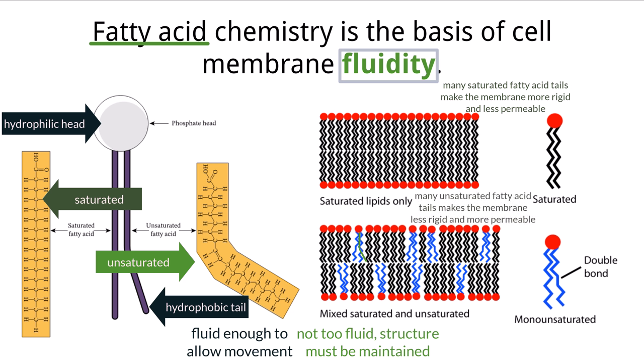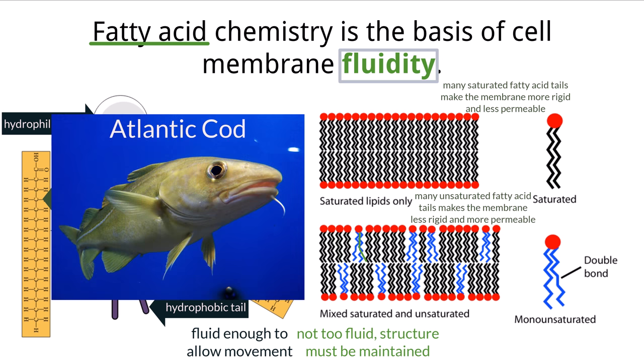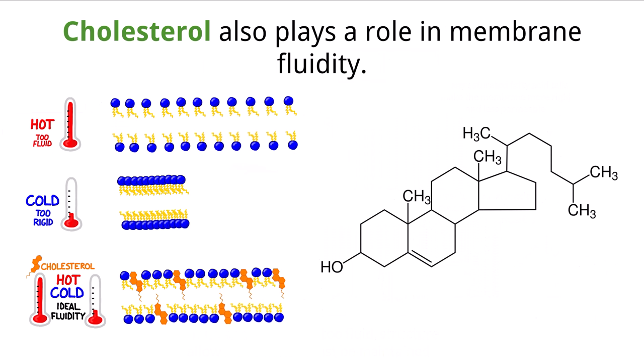The balance of membrane fluidity is then dictated by the ratio of saturated and unsaturated fatty acid chains of phospholipids. The ideal ratio is usually dictated by external factors like temperature. If an organism lives in a cold environment — like the Atlantic cod, for example, where particles are moving slowly within their cells — they usually have a higher concentration of unsaturated fatty acids, which makes their cell membranes more permeable to be able to move under colder conditions.